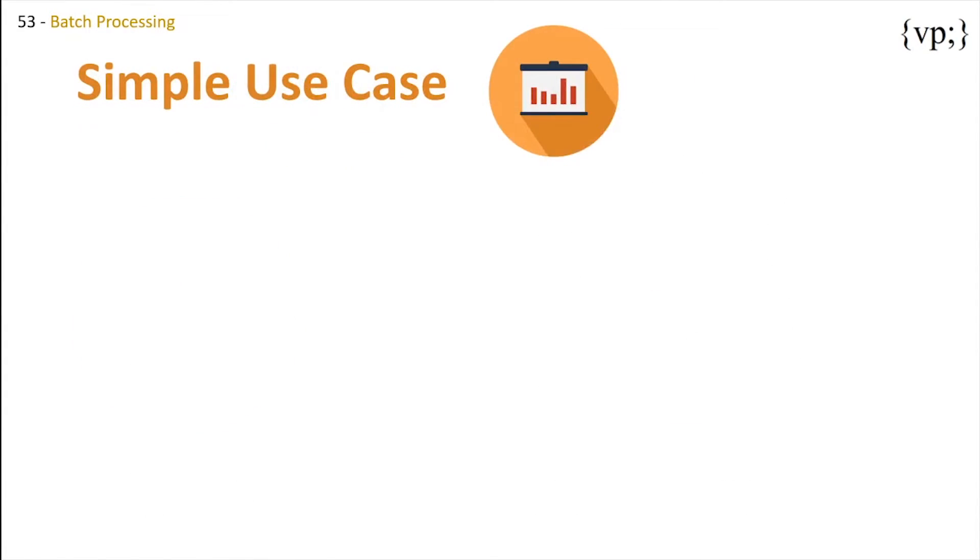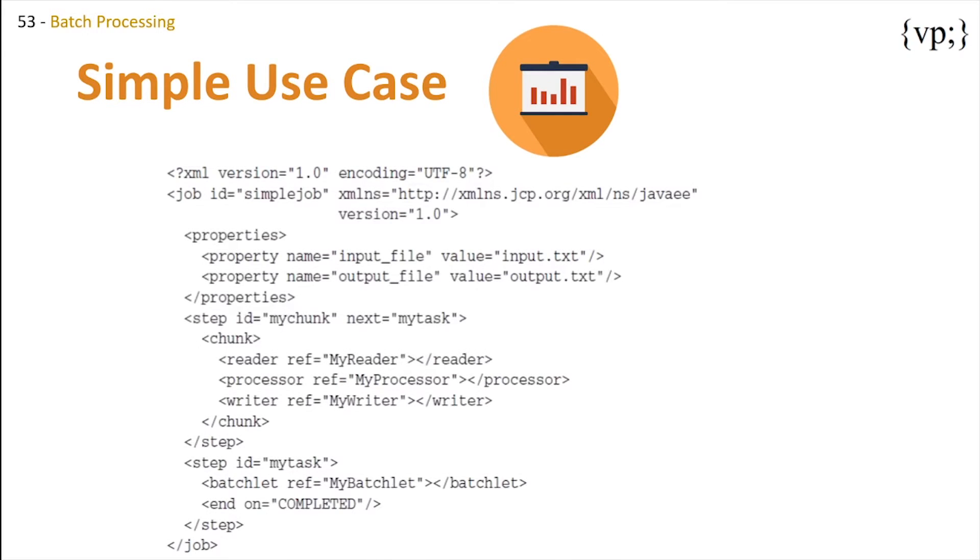Now, the simple use case. This section demonstrates how to define a simple job using the job specification language, JSL, and how to implement the corresponding batch artifacts. Over here, we have a little code snippet that shows us a chunk step and a task step.